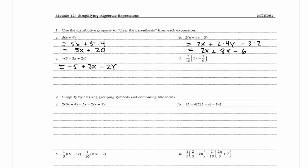In D we have 3 over 10 times (2x minus 1/6). We multiply 3 tenths times each term. So we have 3 tenths times 2x minus 3 tenths times 1 sixth. That gives us 6 tenths x minus 3 over 60. Simplifying: 6 over 10 becomes 3 over 5, and 3 over 60 becomes 1 over 20. So the answer is 3/5 x minus 1/20.